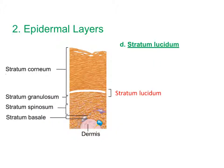The fourth layer, present only in thick skin, is the stratum lucidum. It is called that because histologically it looks very clear and transparent. This layer is only two to three cell layers thick, and keratinization simply continues in this layer.